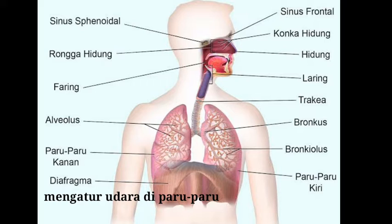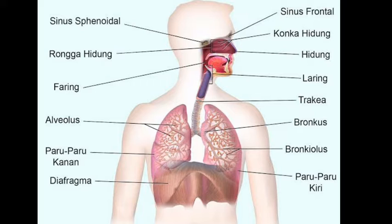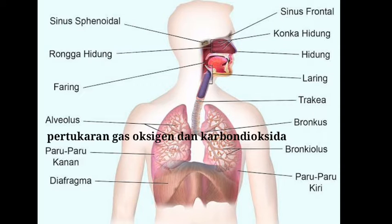Kita ada diafragma, berfungsi sebagai pengatur udara yang ada di paru-paru. Jadi, udara yang masuk ke dalam tubuh kita diatur oleh organ yang disebut dengan diafragma. Selanjutnya, kita punya organ yang berbentuk seperti kelereng bulat-bulat yaitu alveolus. Fungsi dari alveolus adalah pertukaran gas, oksigen, dan karbon dioksida.